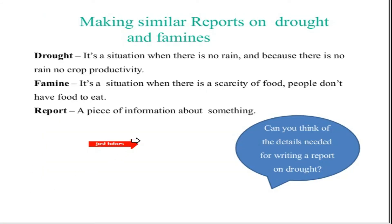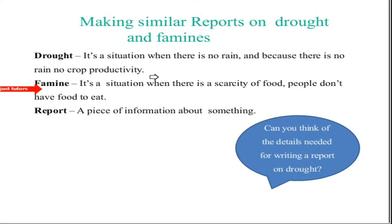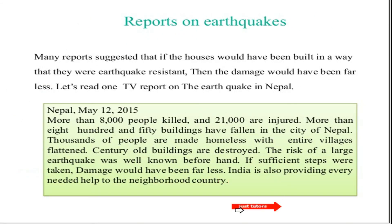Now, making similar reports on drought and famine. Drought is a situation when there is no rain and therefore no crop productivity, so people start starving. Famine is a situation when there is a scarcity of food — people don't have food to eat. Famine is basically a result of drought. A report is a piece of information about something, like the earthquake report format we have here.